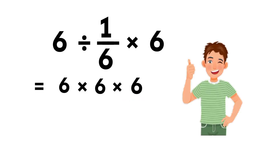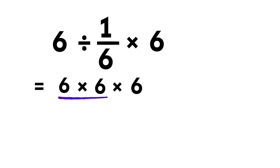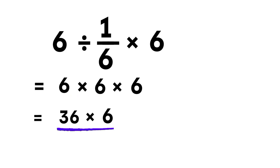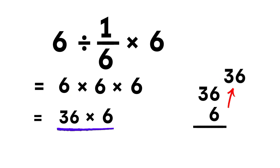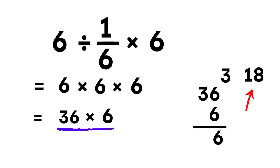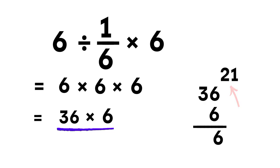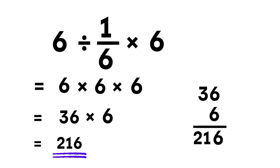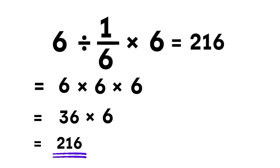That looks satisfying. 6 times 6 gives us 36, and now 36 times 6. 6 times 6 is 36 — write 6 and carry 3. 6 times 3 is 18, add the carried 3, and we get 21. So the final result comes out as 216. That is the correct answer: 216.